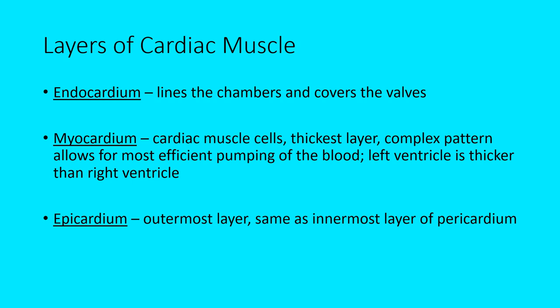Looking at the cardiac muscle itself, there are three layers: the endocardium, myocardium, and epicardium. Cardium refers to heart; endo is always the most interior layer — it lines the chambers and covers the heart valves. The epicardium is the outermost layer. The myocardium is the middle layer — the cardiac muscle itself — and the thickest layer. The muscle fibers are arranged in a complex, spiral pattern, which makes contraction very efficient for pumping blood.